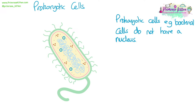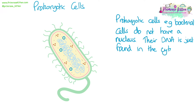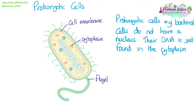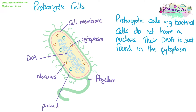Prokaryotic cells are a different type of cell — these cells do not have a nucleus. The name prokaryotic literally means 'before the nucleus'; they evolved before a nucleus became a structure in cells. An example of a prokaryotic cell is a bacterial cell, and their DNA is just found floating in the cytoplasm, not inside a nucleus. Bacterial cells have a cell membrane, cytoplasm, sometimes a flagellum (not all), plasmids, ribosomes, and their chromosome floating in the middle. They also have a cell wall, but it is not made of cellulose.